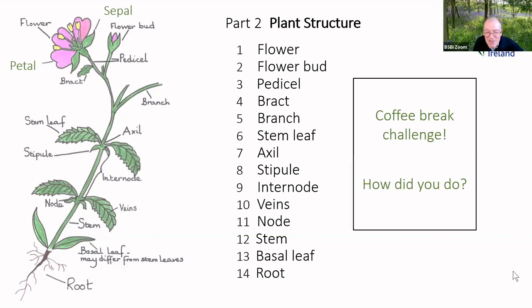One final question before we get going: 'Have you used the Poland and Clement vegetative key, and how do you find it compared with Francis Rose?' The vegetative key is a very clever book which relies wholly on vegetative features — you don't have to have a plant in flower to identify it, and there are few other books like it available in the world; it is truly groundbreaking. But it is quite tricky to use. It's much easier to learn to identify plants when they're in flower, so for the meantime I would stick to using Francis Rose or the wildflower book by Collins.